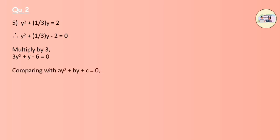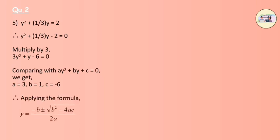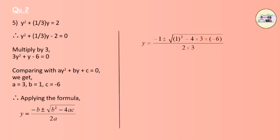Comparing with ay² + by + c = 0, we get a = 3, b = 1, c = -6. Applying the formula: y = (-b ± √(b² - 4ac)) / 2a = (-1 ± √(1² - 4·3·(-6))) / (2·3), which equals (-1 ± √73) / 6.